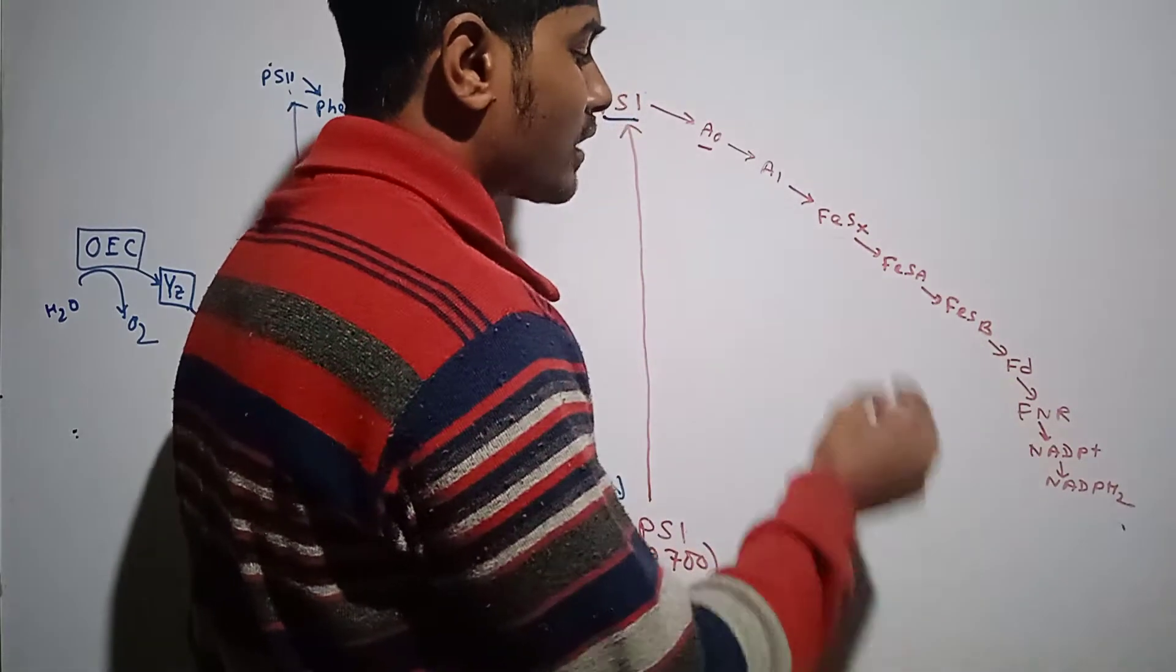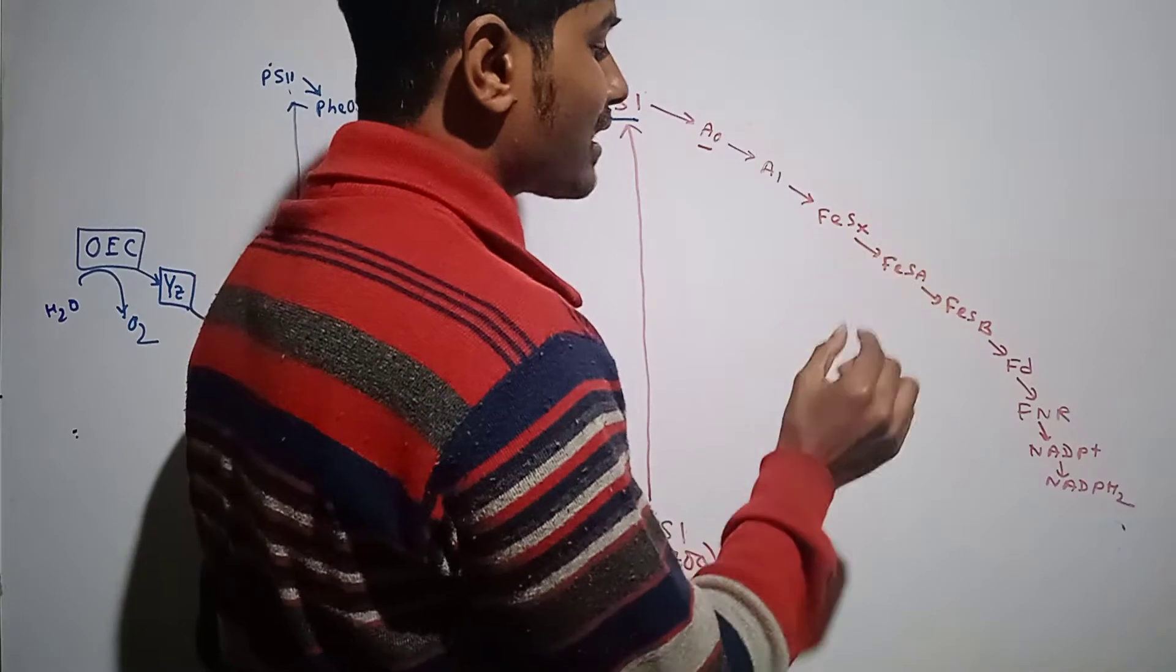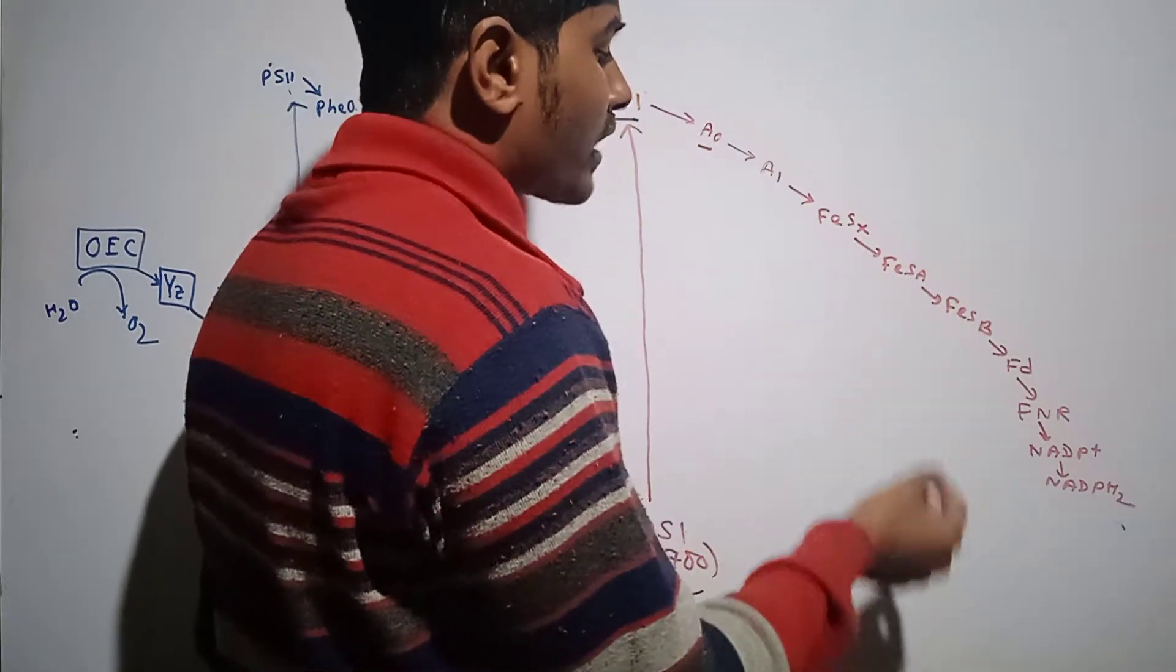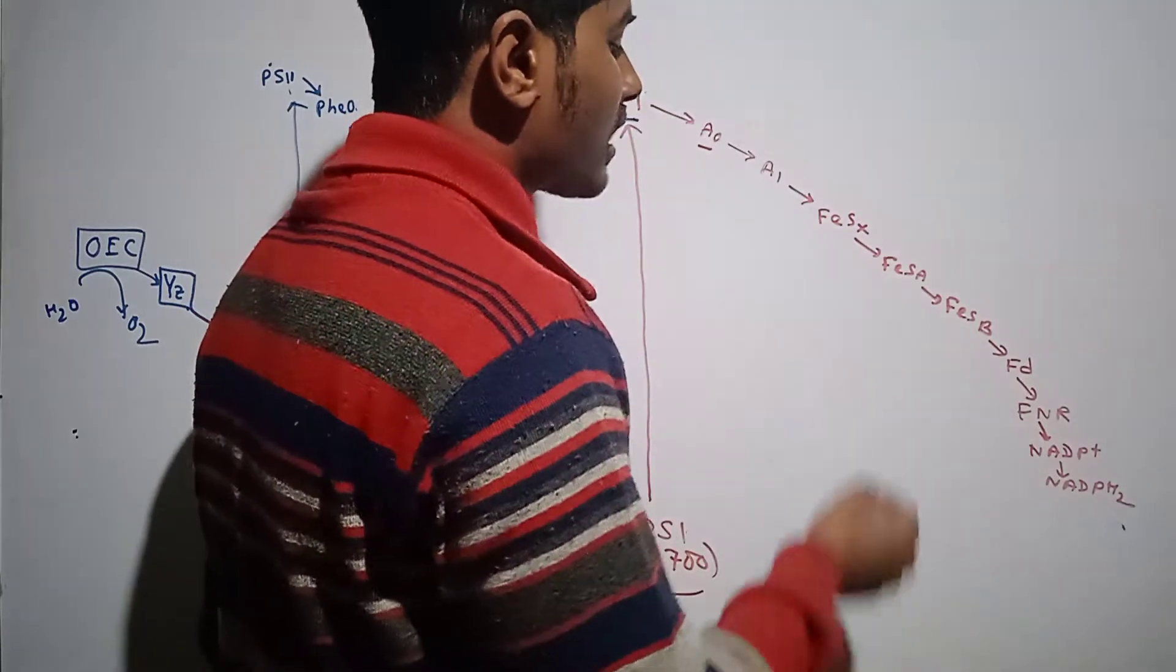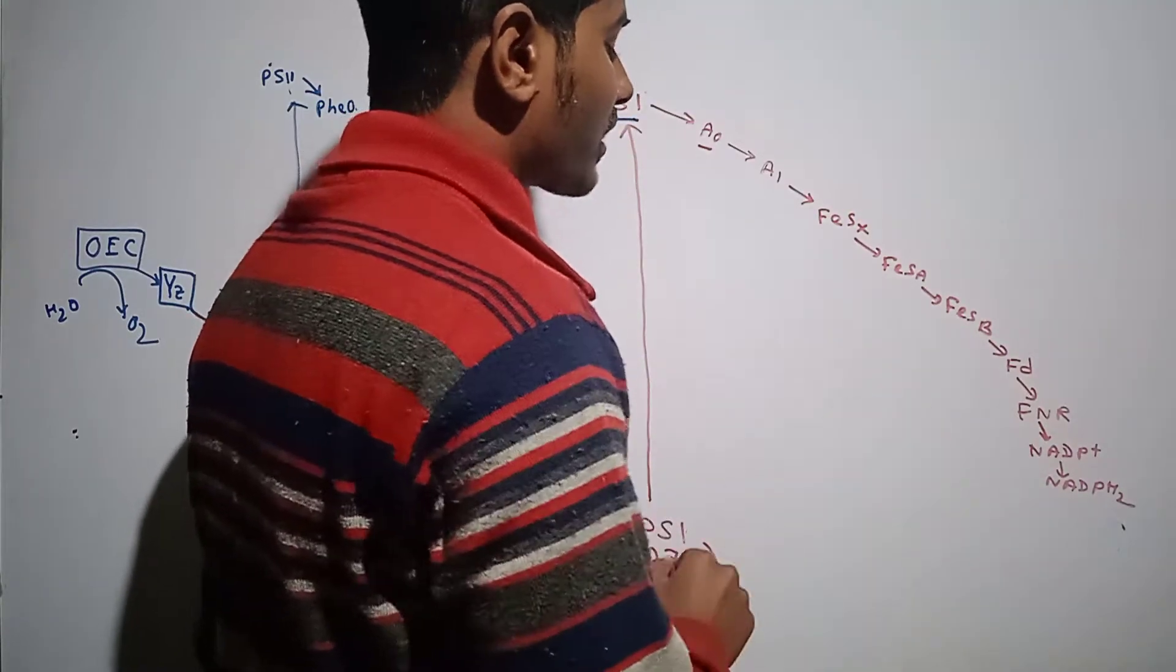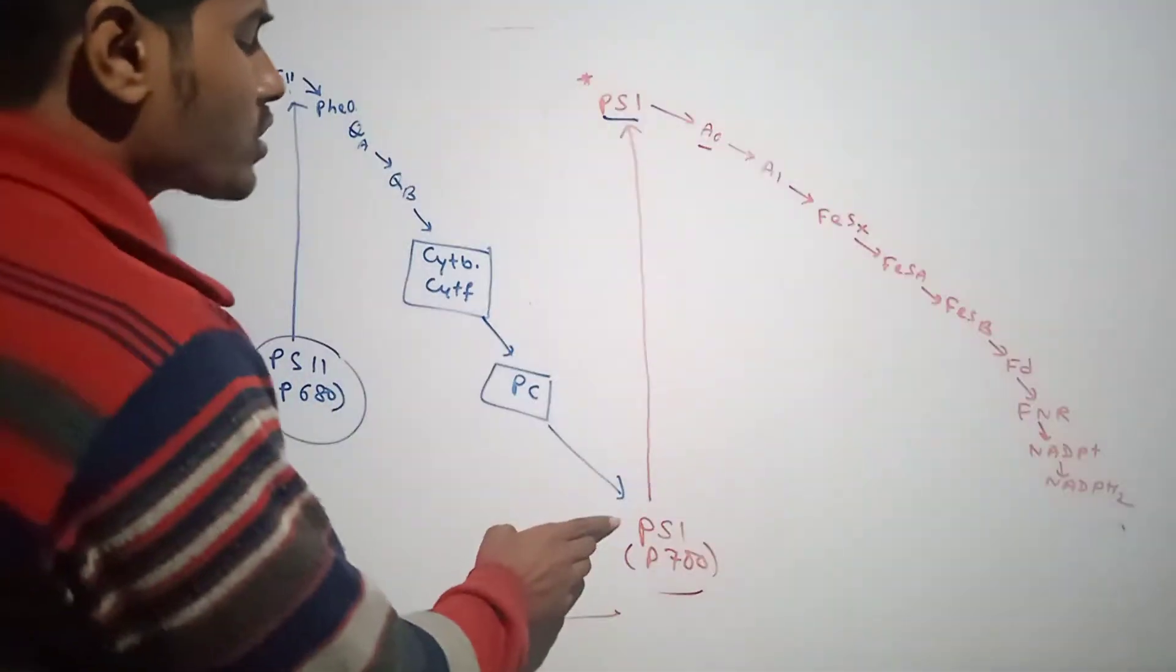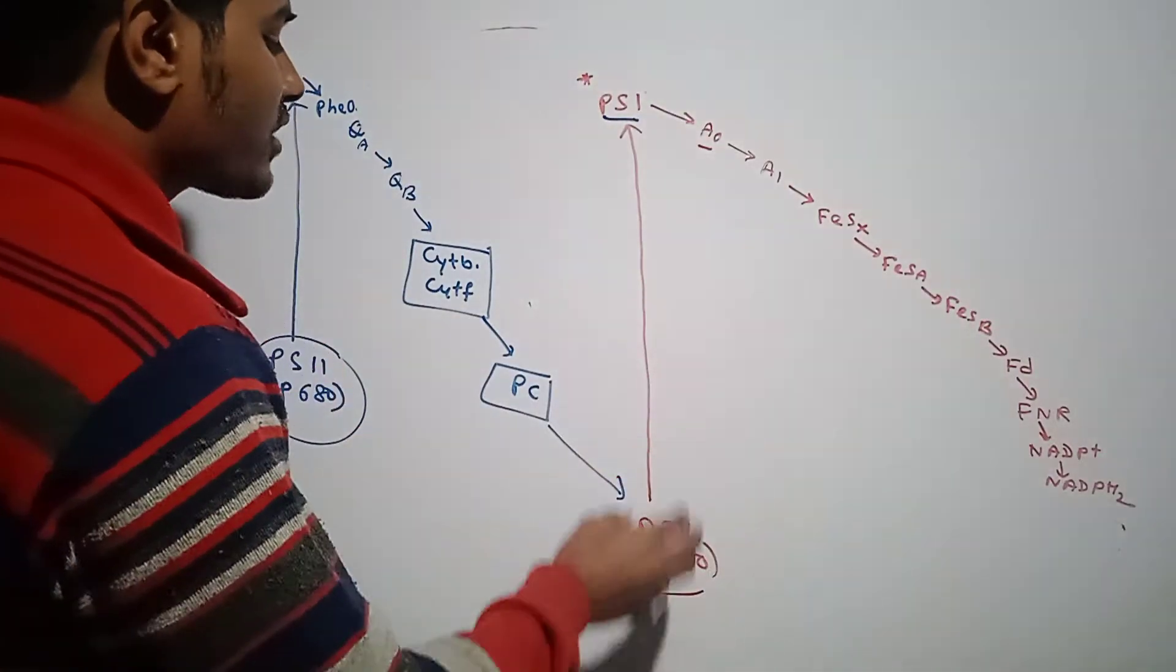As the name implies, reductase means enzyme. So it is basically reducing NADP+ to NADPH2. That's why it is named ferredoxin NADP reductase. Now, as Photosystem 1 has released this electron, it has become electron deficient.